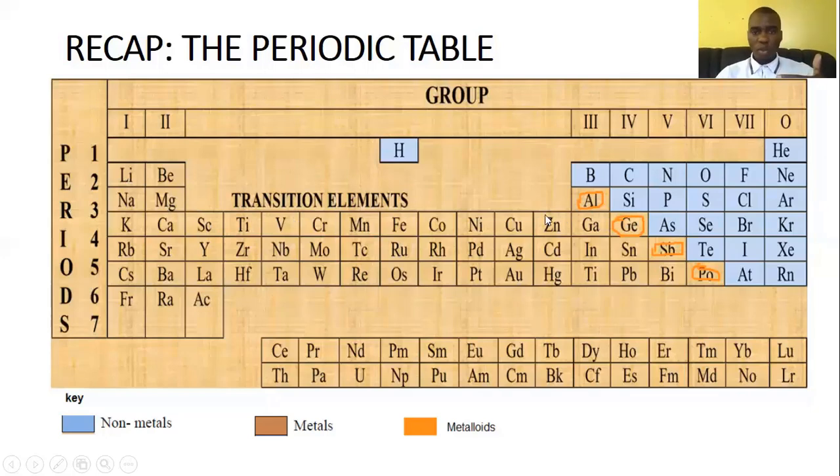Soon you'll understand why. Then we go to group three. So meaning everything in here is group three. We go to group four, we go to group five, we go to group six, we go to group seven. Then we have group eight, which they write as group O for a reason that you will be able to understand by the end of this video.